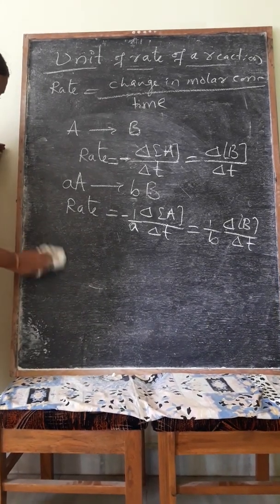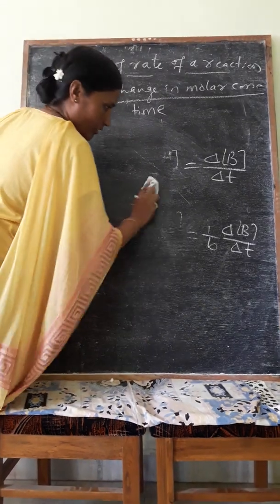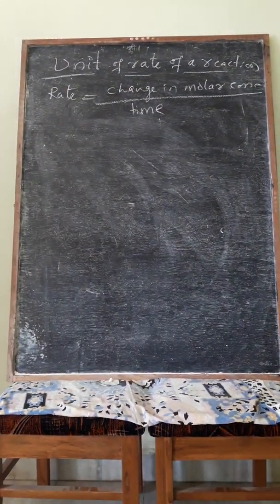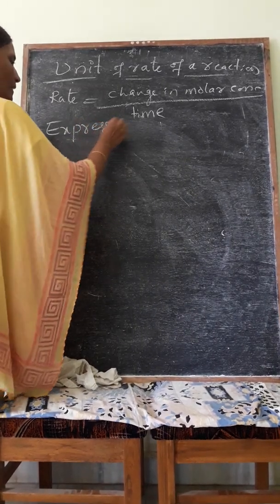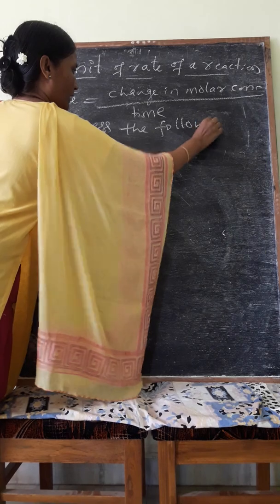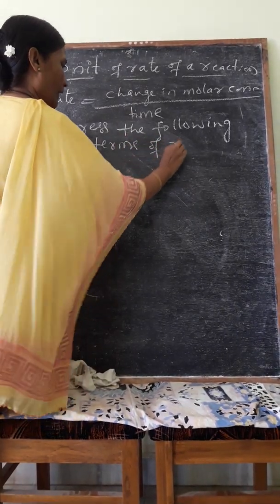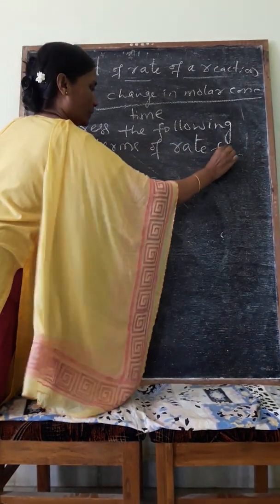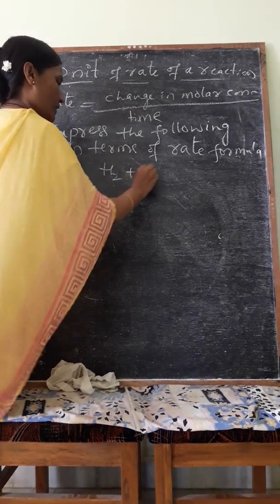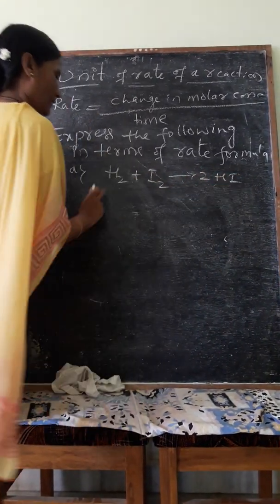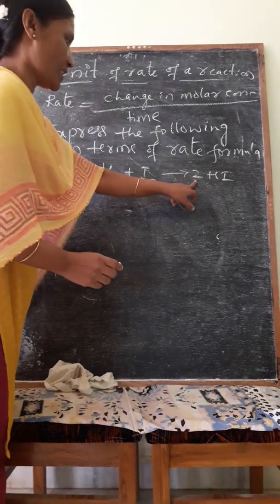Here are problems to calculate the rate of reaction. Express the following reactions in terms of rate expression. First: H2 + I2 giving 2HI. H2 is reactant, I2 is reactant, and HI is product with coefficient 2. Second: Hg + Cl2 giving HgCl2.